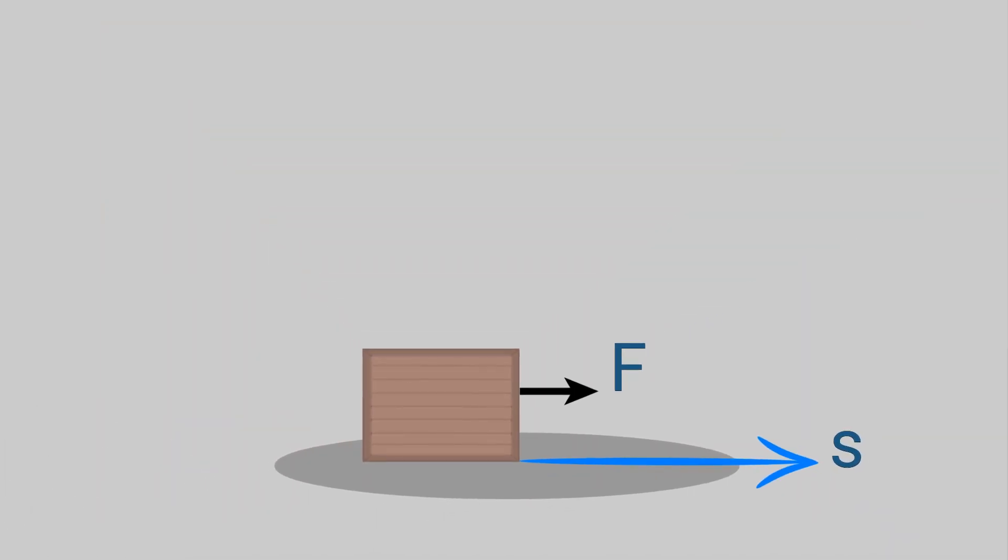Work done. Work done is given by the formula force multiplied by distance travelled in the direction of the force.